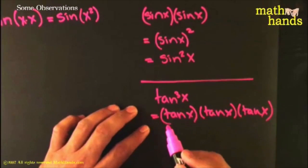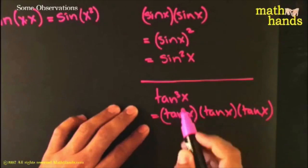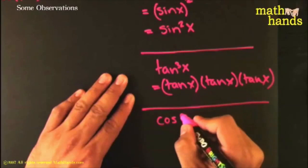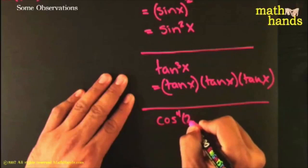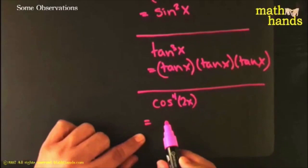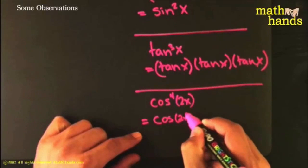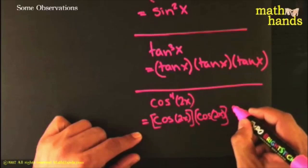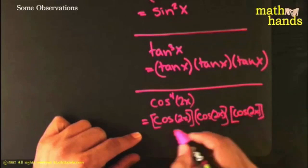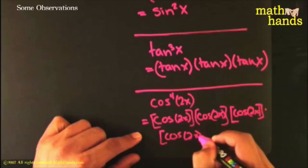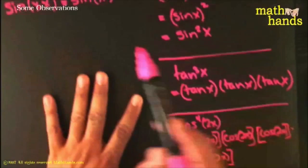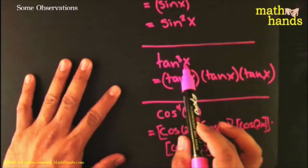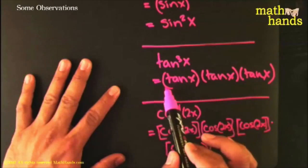Of course there is one exception to this exponent notation. Before we get there, suppose you have cosine to the fourth power of 2x - what does that mean? That means cosine of 2x, times itself, times itself, times itself - four times total. That's exactly what it means. So if the exponent is placed next to the function name, it means you're multiplying the whole expression by itself that many times.